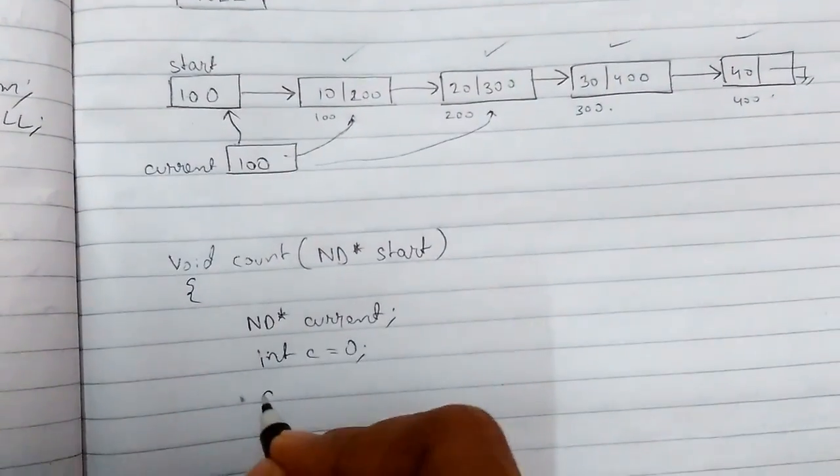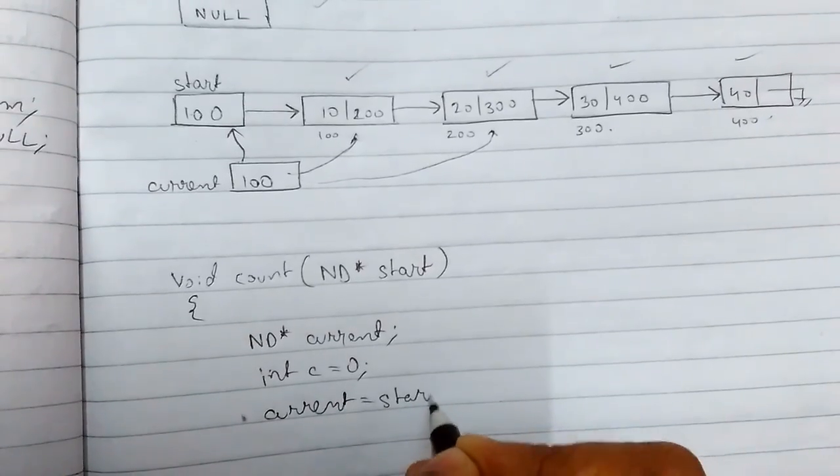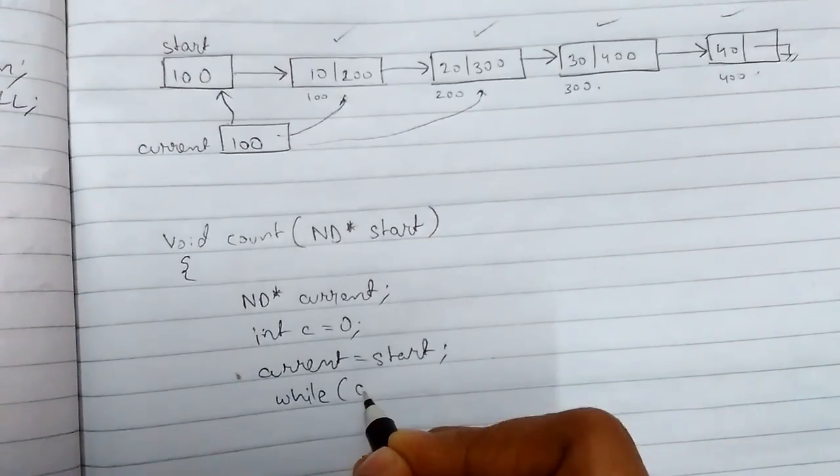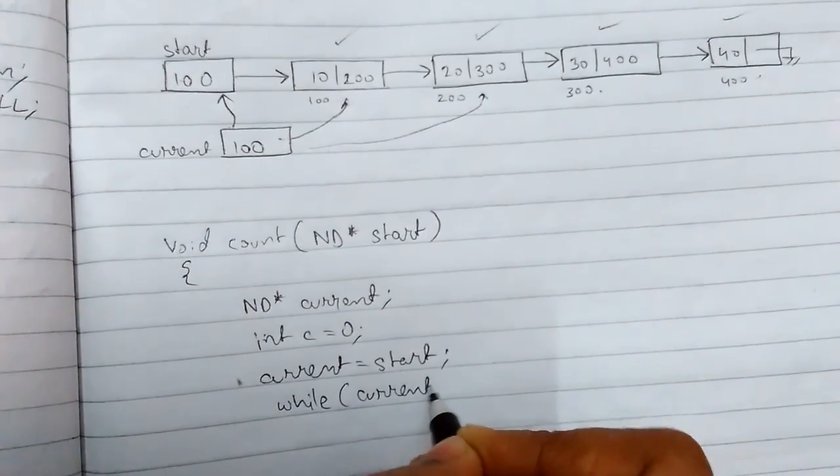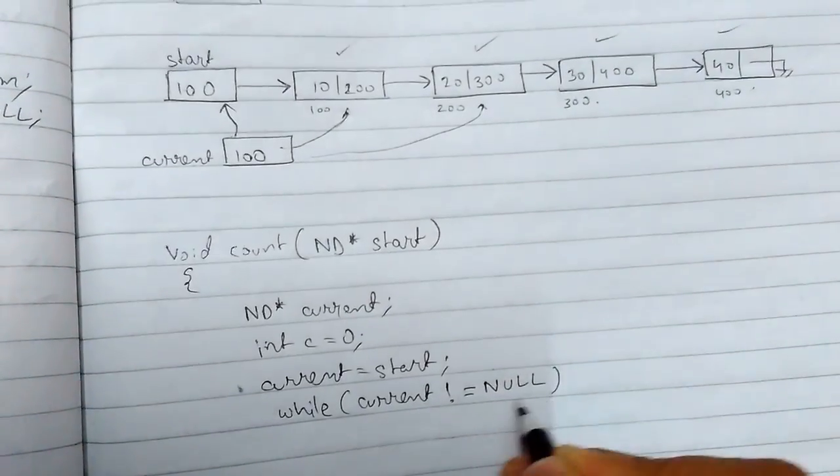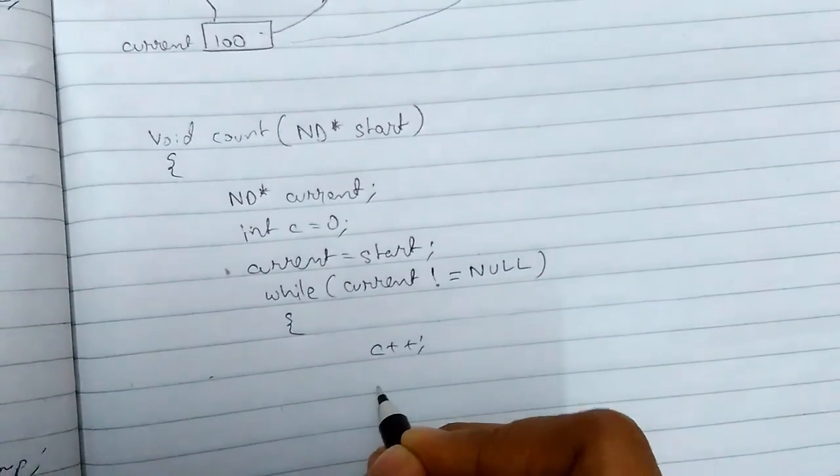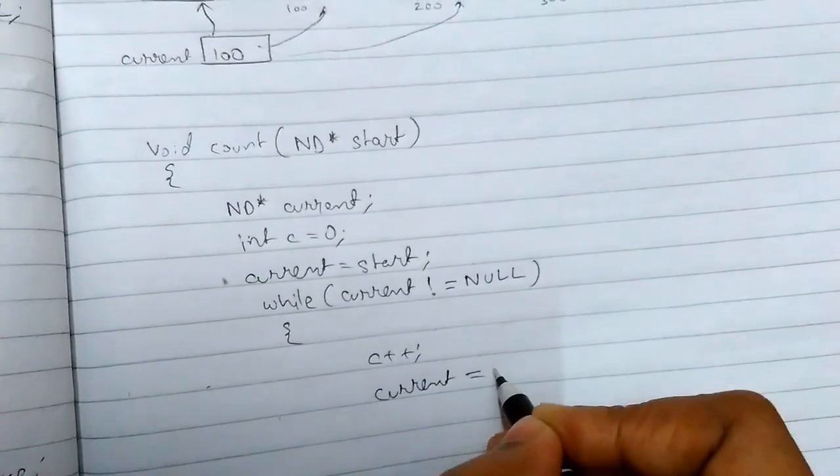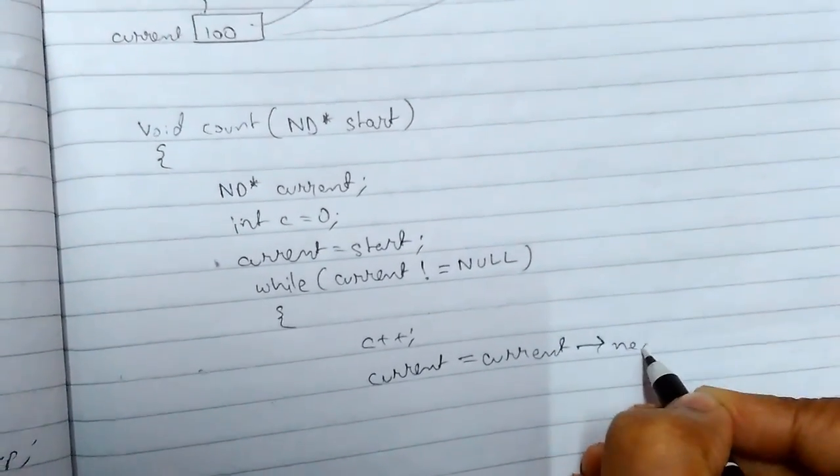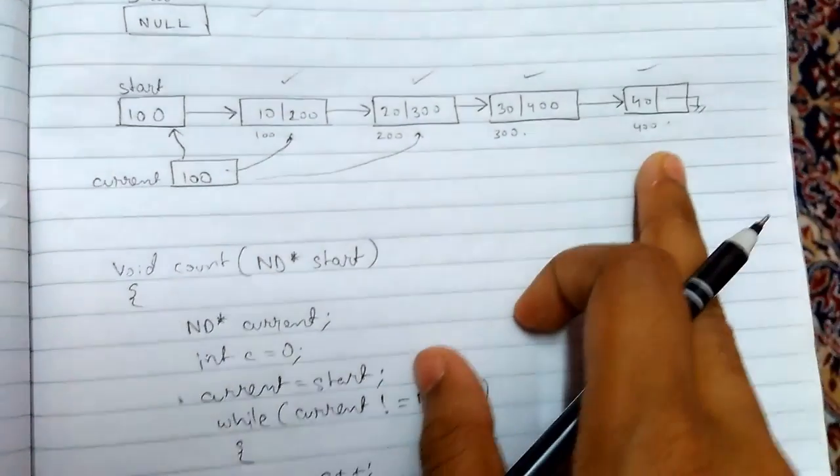Now we'll move till the end of the list. We check if current not equals to null, then enter the loop, increment c, and move current equals to current arrow next. This will traverse till the end of the loop.